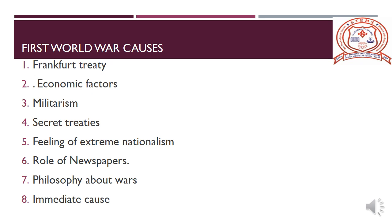The fifth reason was the feeling of extreme nationalism. The feeling of nationalism became very strong. Leading European nations started propagating and teaching extreme nationalism to their people. They created a feeling of love of one's own country and hatred for other countries. The German ruler, Kaiser William II, was the originator of nationalism and colonialism, and he raised a huge army in Germany.